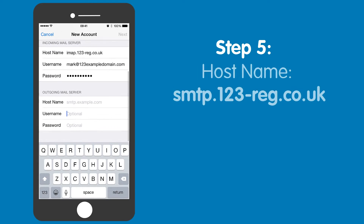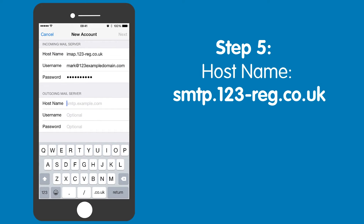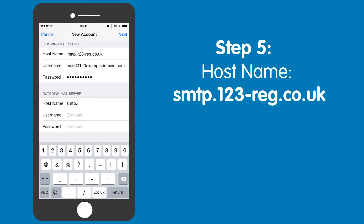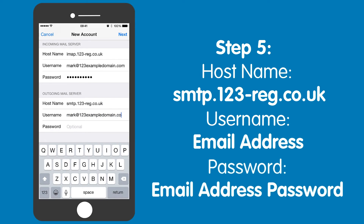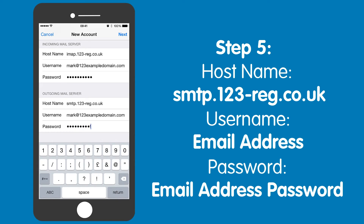Now to set up the outgoing mail server. The 123reg hostname for this is smtp.123-reg.co.uk. The username is your email address again and the password is your email address password. Once you have entered these settings, tap on the next button.